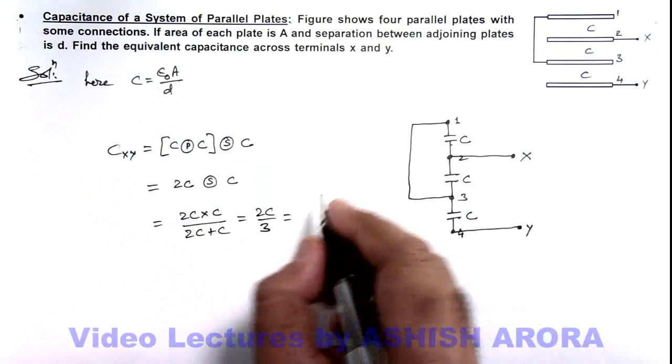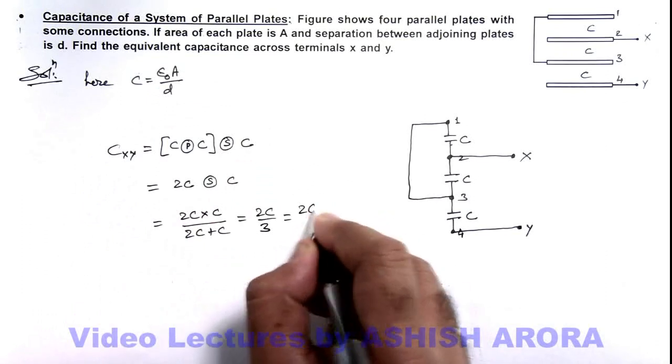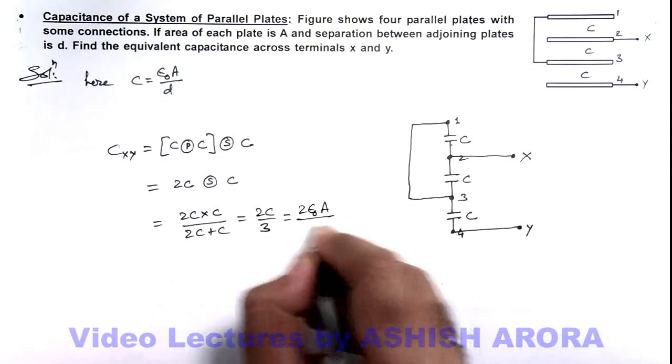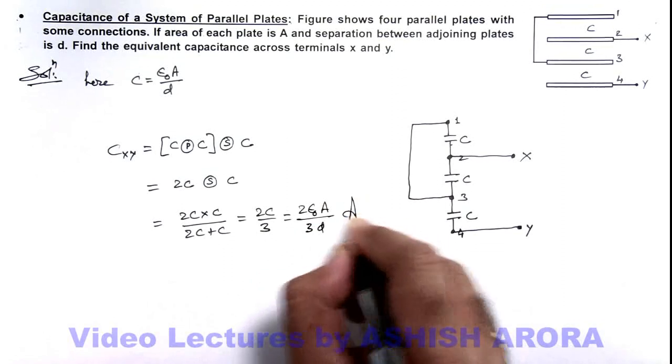If we substitute the value of c over here, this is 2 epsilon not A by 3d. That is the answer for this problem.